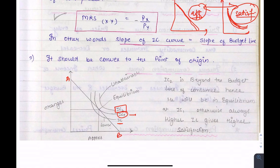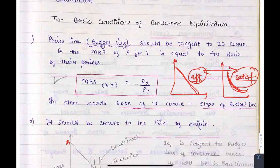We must also remember that the IC curve must be convex shaped at the equilibrium point. Consumer equilibrium has two conditions: first, the slope of the IC curve is equal to the slope of the budget line; and second, the IC curve is convex to the point of origin.